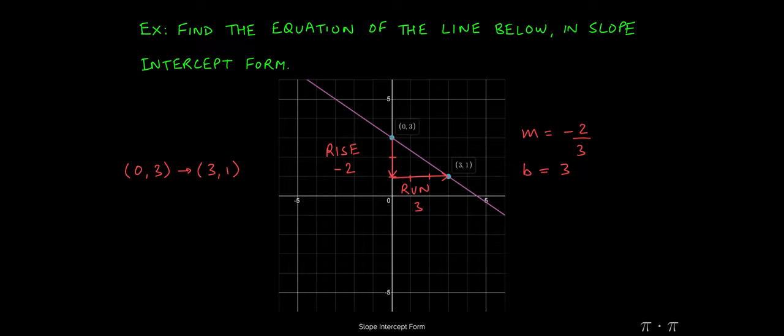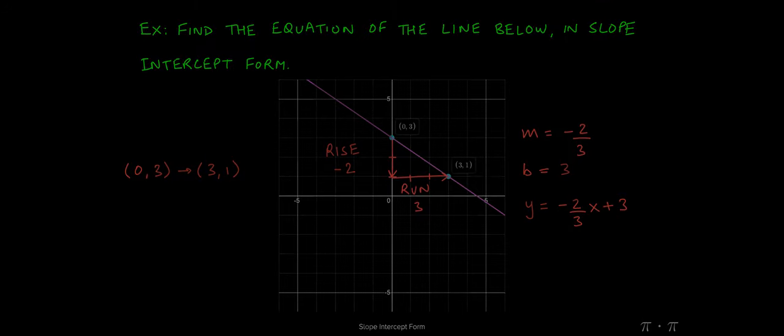And if we have m and b, we can simply write down the equation of our line, y equals mx plus b, as y equals negative 2 thirds, which is the slope, times x plus the y-intercept, 3. And that's it. Thank you.